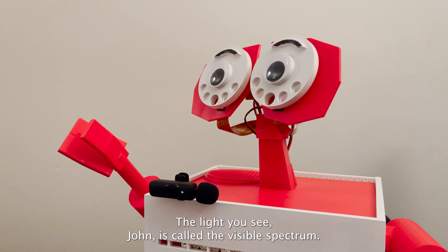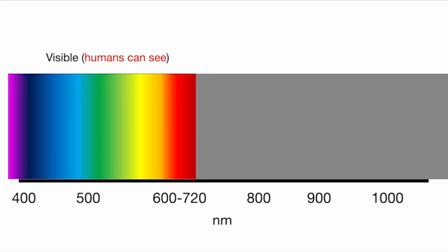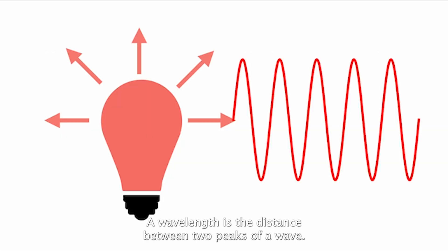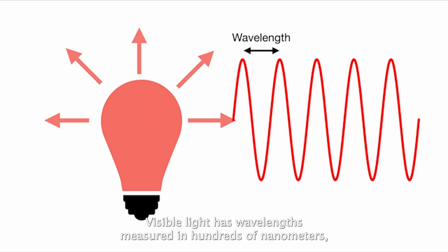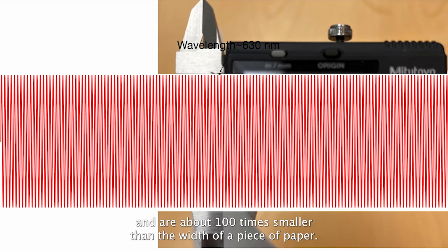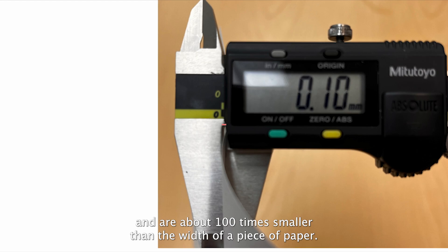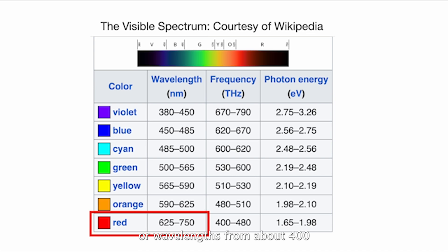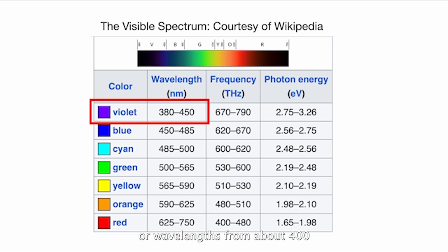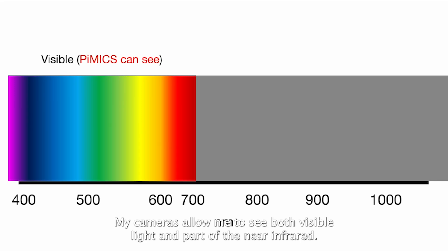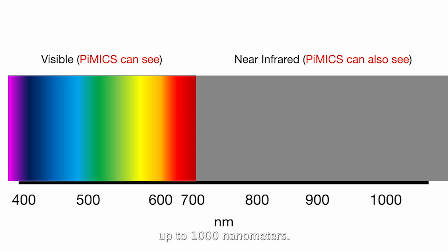Sure! The light you see, John, is called the visible spectrum. Light is composed of waves. A wavelength is the distance between two peaks of a wave. Visible light has wavelengths measured in hundreds of nanometers and are about 100 times smaller than the width of a piece of paper. The visible spectrum has colors from violet to red, or wavelengths from about 400 nanometers to about 700 nanometers. My cameras allow me to see both visible light and part of the near-infrared, with wavelengths up to 1,000 nanometers.